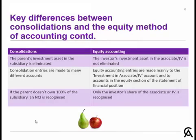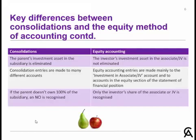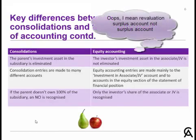When we're doing consolidations, our journal entries are made to many different accounts across the entire set of financial statements — it might be P&L entries, assets and liabilities with inter-entity loans, sales and purchases, lots of entries throughout. Whereas when we're doing equity accounting entries, most of them are made to the investment in associate or joint venture account, which is an asset account. The other side of the journal entry is usually to the equity section in our statement of financial position — things like the share of associate's profit for the year, share of opening retained earnings, or share of a post-acquisition surplus account.